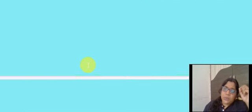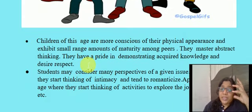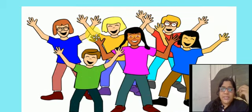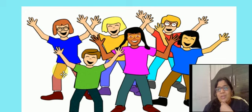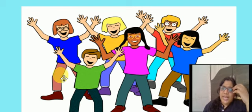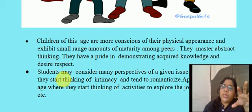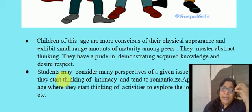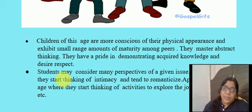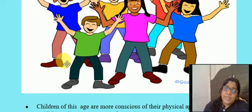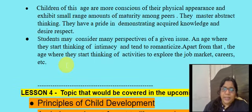When children are 14 to 17 years, this is an age where they are very conscious about their physical appearance — their hair, their skin tone, how they dress up. They think the whole world is looking at them. This is also a stage where children are good at abstract thinking and can visualize things better. They really love to demonstrate, and they strive for respect.